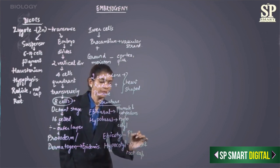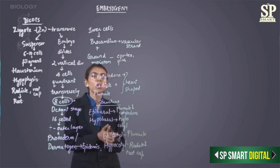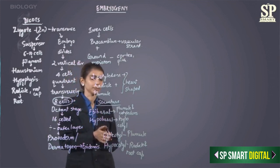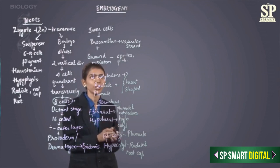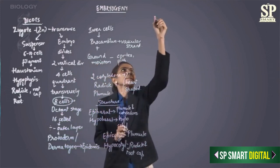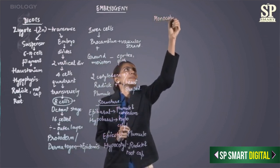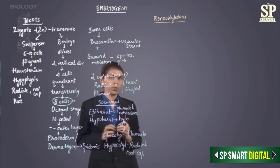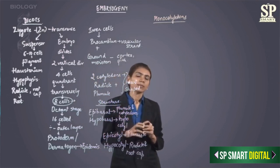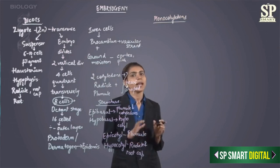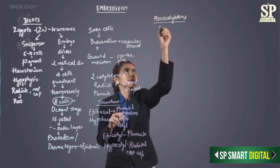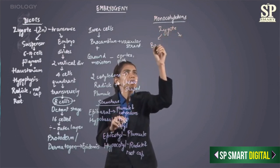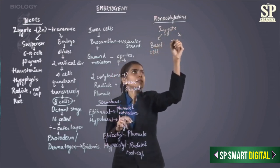So this is how development and structure of the embryo is in dicotyledons. Now we come to development and structure in monocotyledons. In monocotyledons, again the zygote is a diploid cell. The zygote gets elongated and divides transversely into two cells — called the basal cell and the terminal cell.